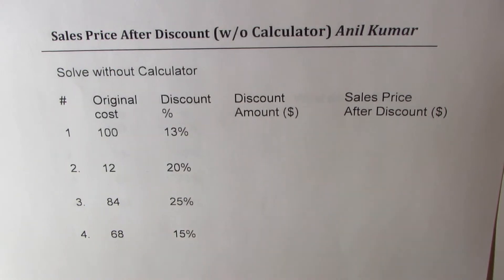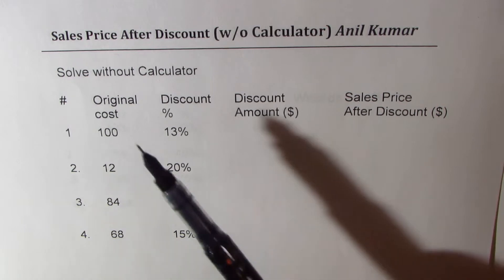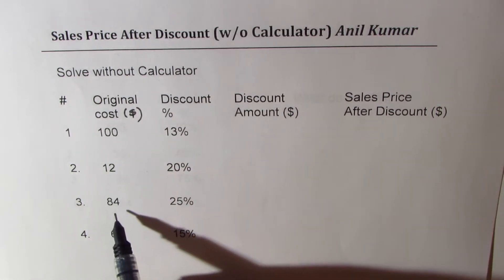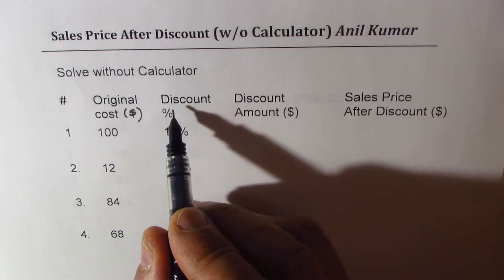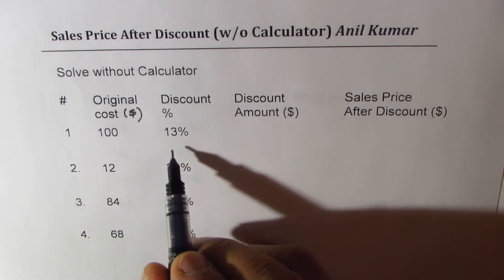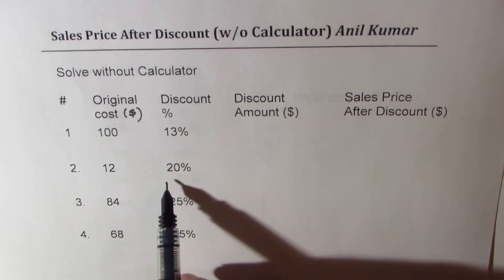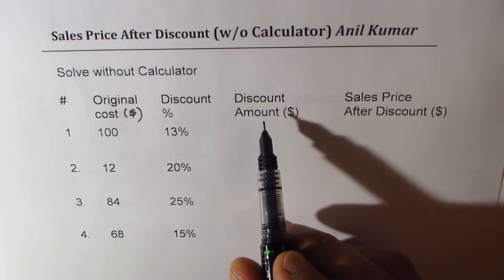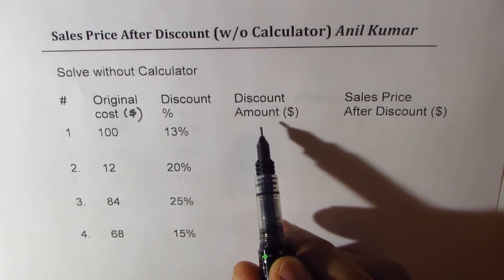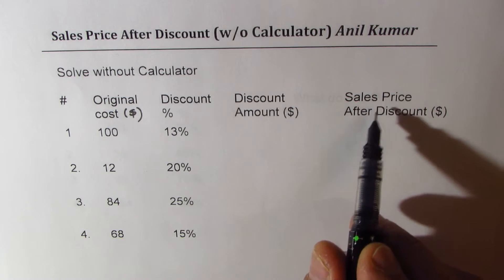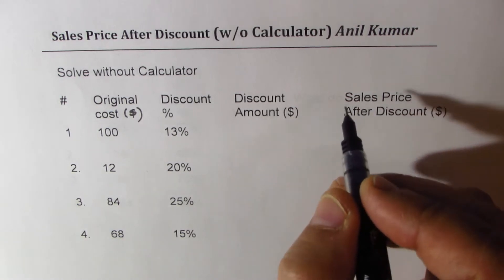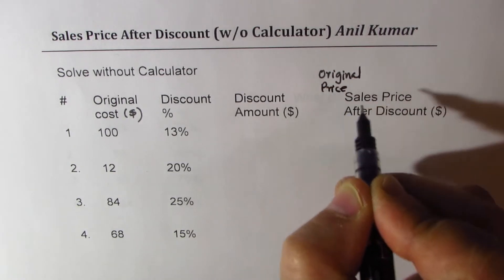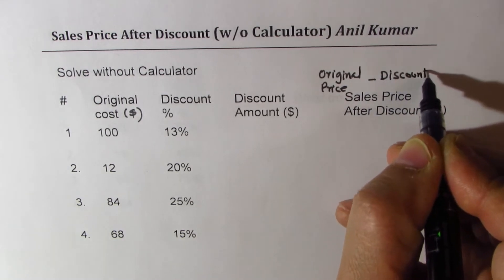We need to solve without a calculator and find the sale price after discount. I have four values given: original cost in dollars — $100, $12, $84, and $68. Then we have percentage discounts: 13% on $100, 20% on $12, 25% on $84, and 15% on $68. We'll first find the discount amount and then subtract it to get the sale price. Sale price equals original price minus discount.